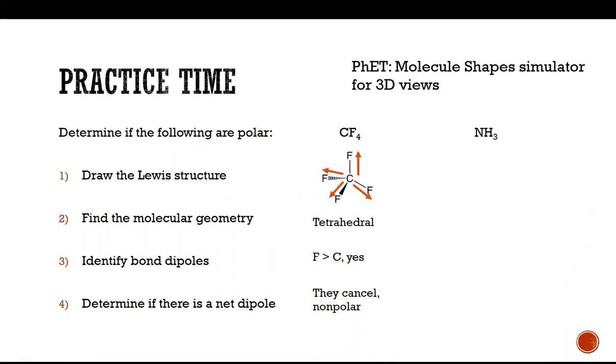Okay, let's move on to ammonia. Ammonia's Lewis structure looks like the following. Its molecular geometry is trigonal pyramidal. In terms of bond dipoles, nitrogen is much more electronegative than hydrogen, and so it does have bond dipoles. Can write them in like so. And they don't cancel out.